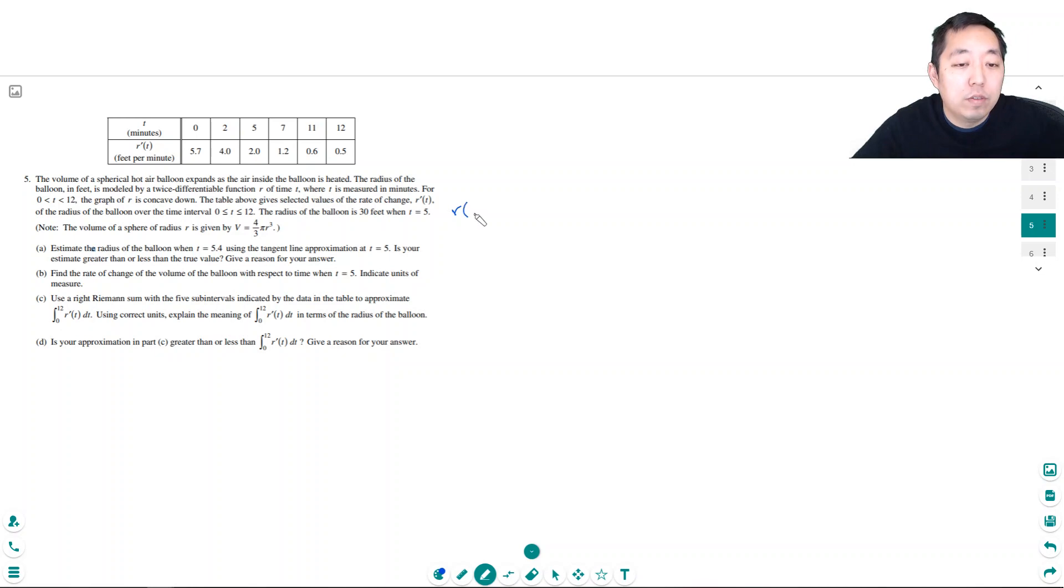So I know r of 5 equals 30, and my goal is to estimate what r of 5.4 is. I'm going to use a tangent line approximation, so r of 5.4 is approximately equal to r of 5 plus delta x, which is 0.4. Actually, let me do it a little differently. Let's do the tangent line approximation properly.